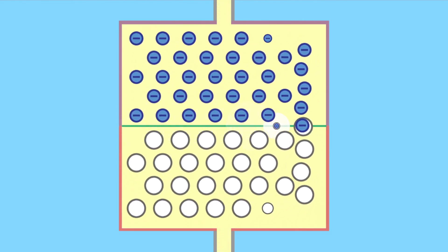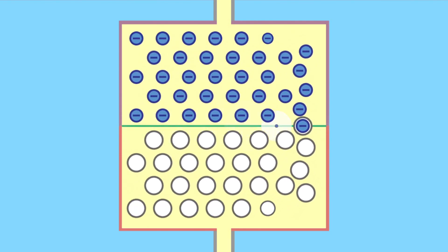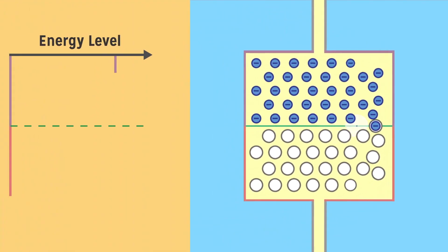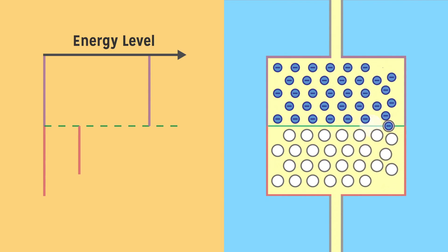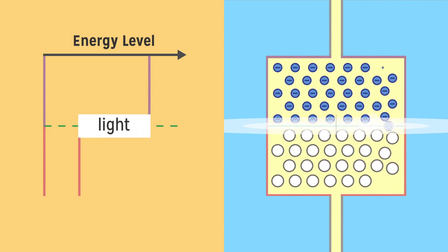When there is a current applied to the LED, the electrons and holes merge at the junction of the n-type and p-type layers. At this point, the electrons go from a higher energy state to a lower energy state, and the difference between the two energy states is emitted as visible light.